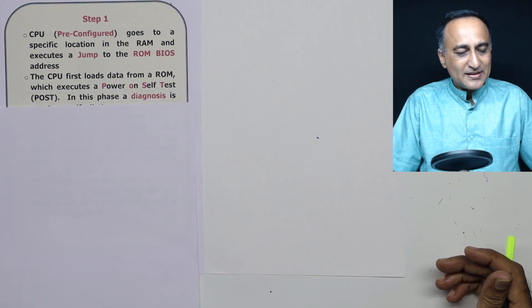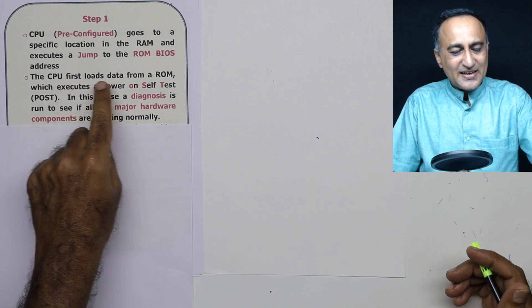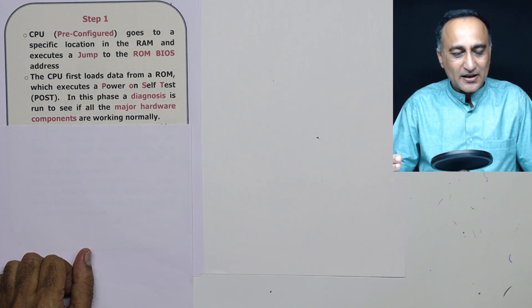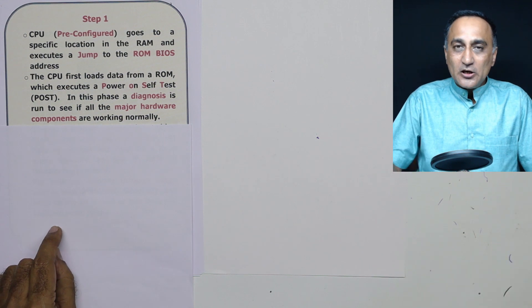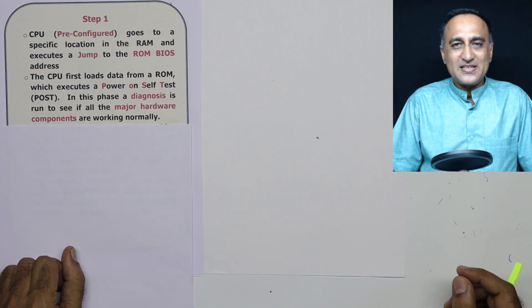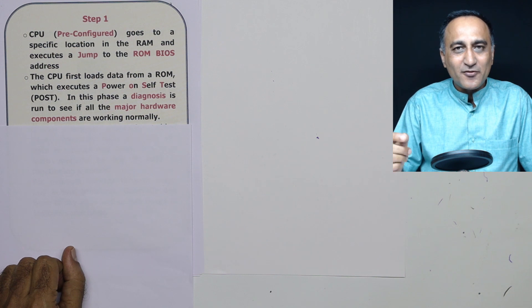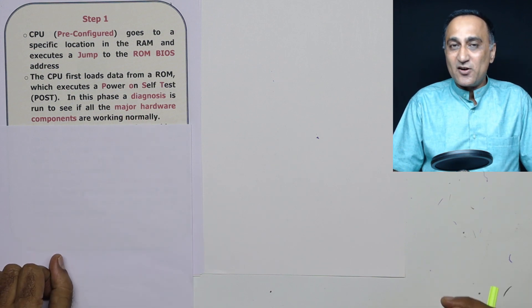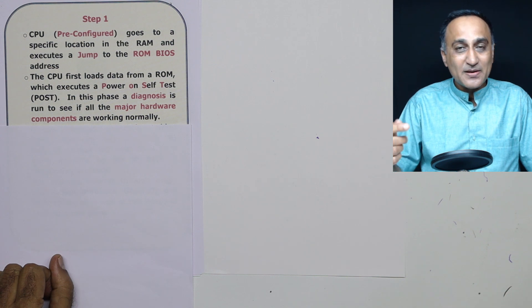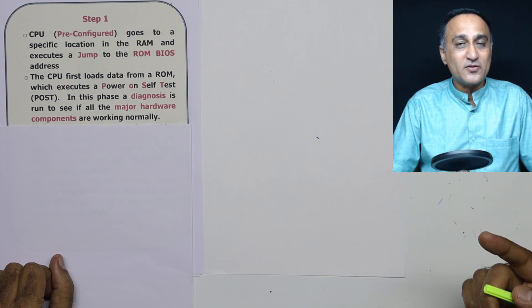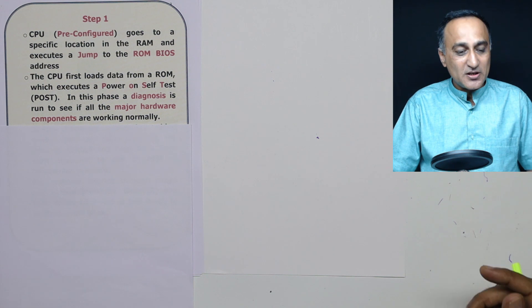It reads instructions from the ROM. Now this instruction first performs something called as the Power On Self Test (POST). What this power on self test is, this is like a doctor checking the health of various hardware components. That's why it is called as a diagnosis of major hardware components. So in this diagnosis, you will have noticed that the keyboard light blinks. Sometimes on the PC, you will see it is writing onto memory and reading from the memory. It checks the connectivity of the hard disk, it checks the connectivity of the keyboard, it checks the connectivity of the speakers. So it does basic checking of the hardware to see if the hardware is working.